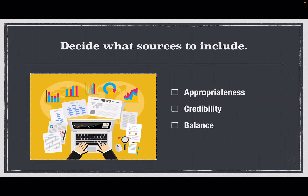Also think about balance. Does the source present enough evidence for its assertions? Does it show any particular bias? Does it present counter arguments fairly? Consider timeliness as well — is the source recent enough? Does it reflect current thinking or research about the subject? Generally, for your research paper, you shouldn't use sources that are older than five years. You should only include an older source if you cannot find that information anywhere else and it is essential to your argument.